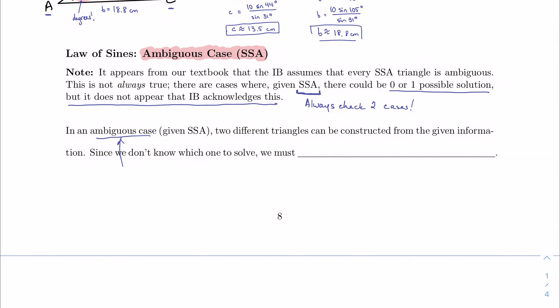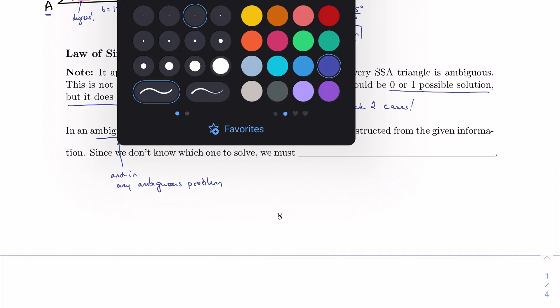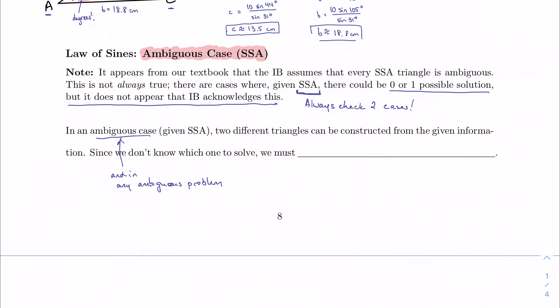Or in any case where there's some sort of ambiguity in math, and in this case, two triangles can be constructed from the given information. In any ambiguous problem, we want to follow this rule. In an ambiguous case in law of sines, two different triangles can be constructed from the given information.